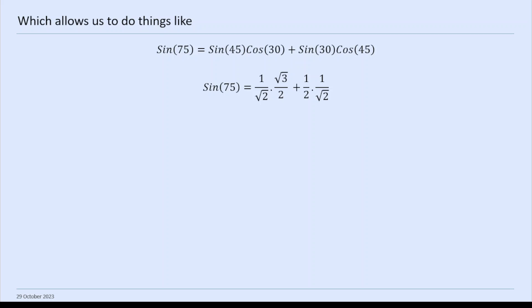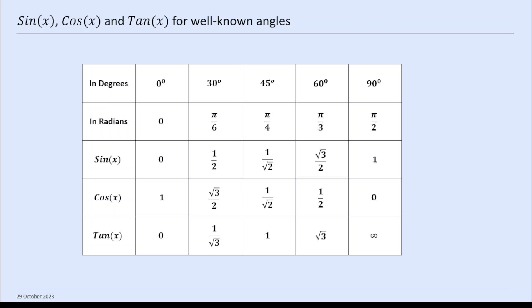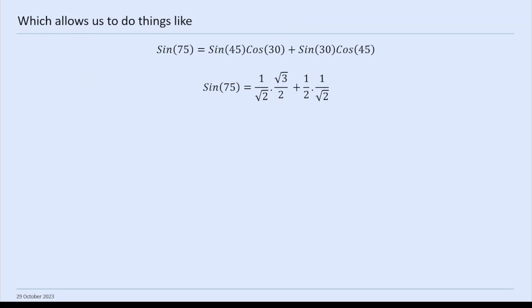And then sine 45 is 1 over root 2. They're all up here. Sine 45 is 1 over root 2, cos 30 is root 3 over 2, sine 30 is a half, cos 45 is 1 over root 2. So we've got 2 root 2 as a common denominator, and then you've got root 3 plus 1 on the top.